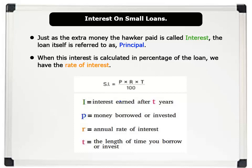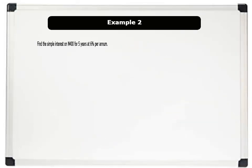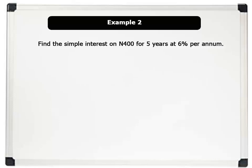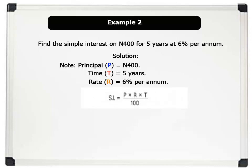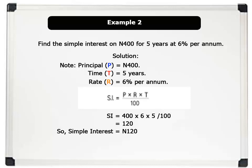Let us see an example. Example 2: Find the simple interest on 400 Naira for 5 years at 6% per annum. Solution: Note that principal is 400 Naira, time is 5 years, and interest rate is 6% per annum. Remember our formula for simple interest: I = P times R times T, all over 100. So, simple interest = 400 times 6 times 5, divided by 100, which equals 120. Therefore, simple interest equals 120 Naira.